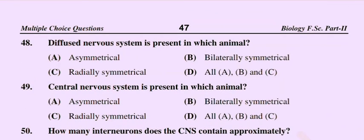Question number 48: Diffused nervous system is present in which animal? Option A: asymmetrical, option B: bilateral symmetrical, option C: radially asymmetrical, option D: all of these. The correct option is option C: radially symmetrical.